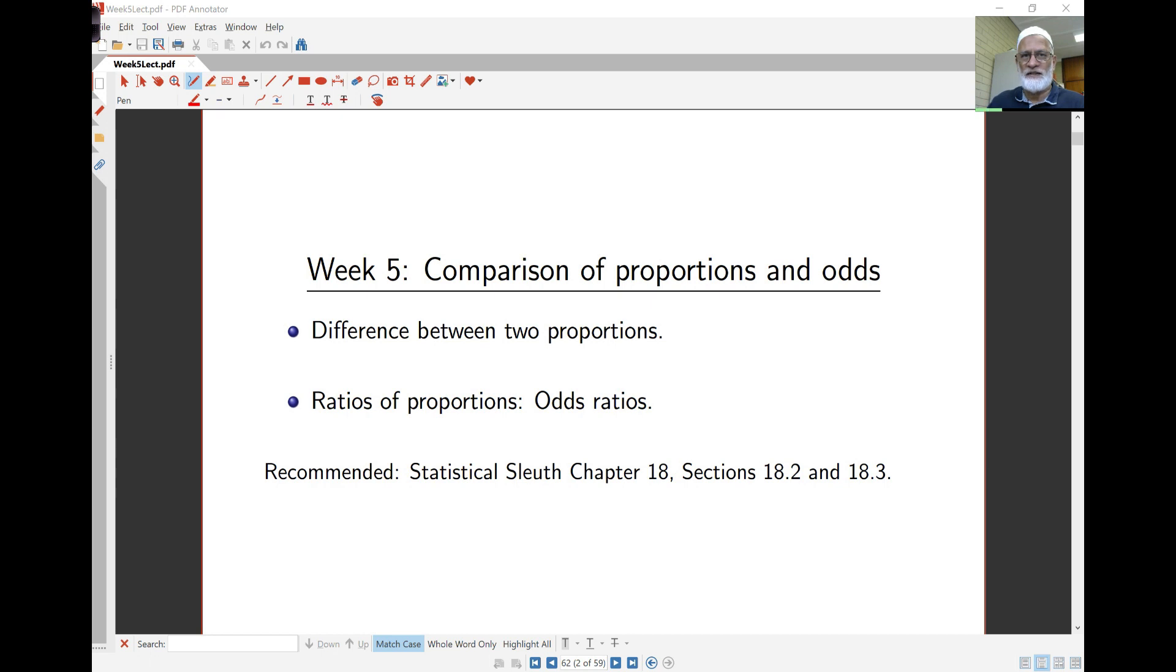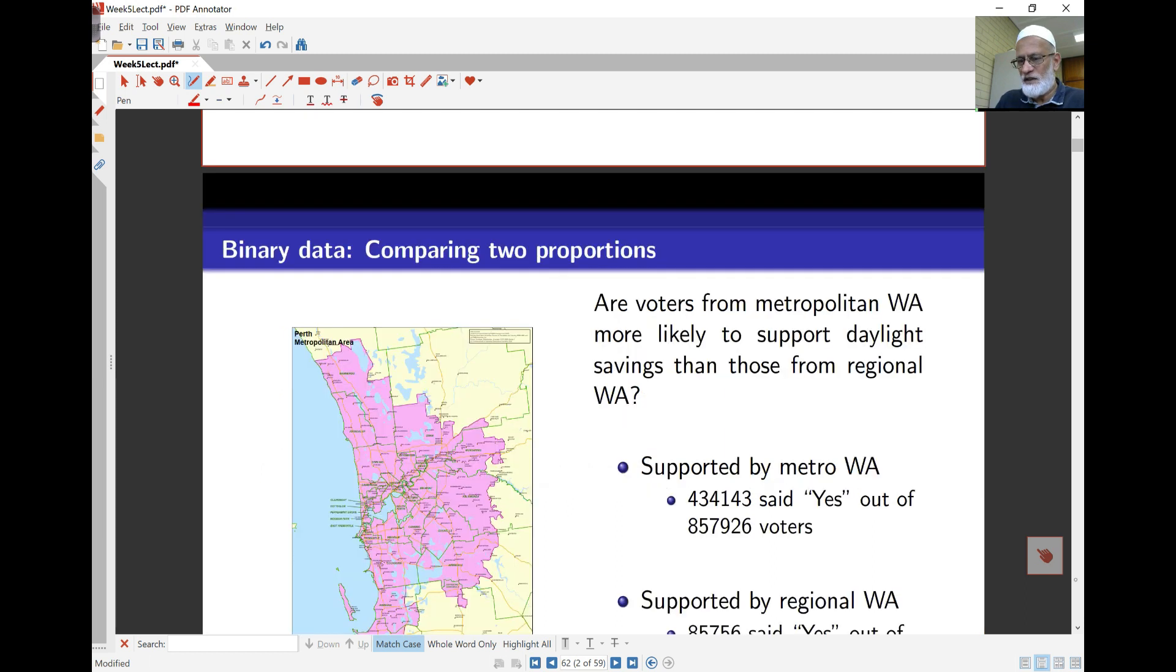Hello and welcome to week 5 lectures. This week we will extend our work from last week. We'll start looking at comparison of two proportions and then we'll introduce this new idea called odds ratio which will be one of the most important things we'll look at from here on. This material is largely from the Stats Sleuth book, chapter 18.